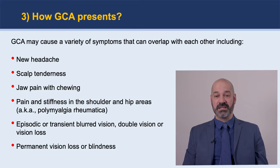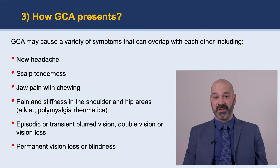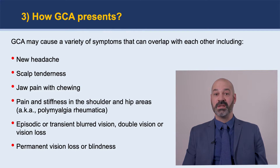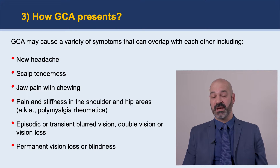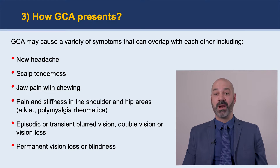Some patients — a minority — may have visual symptoms. Those visual symptoms could be transient or episodic blurred vision, double vision, or sometimes episodic vision loss. Unfortunately, a minority — maybe one or two out of ten — will have blindness. That's why it's very important to seek attention when a patient is having these symptoms, to prevent that poor outcome of blindness.